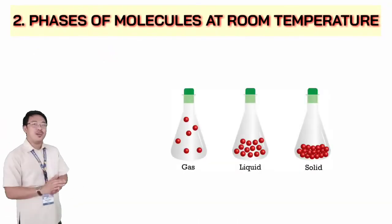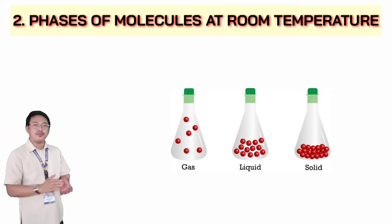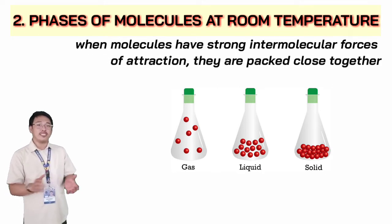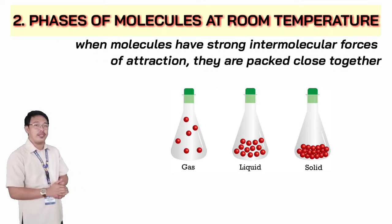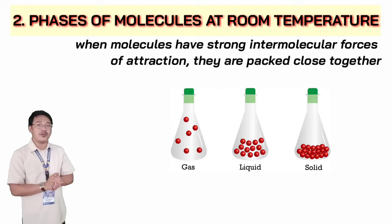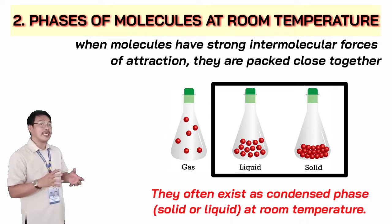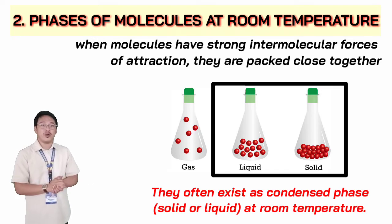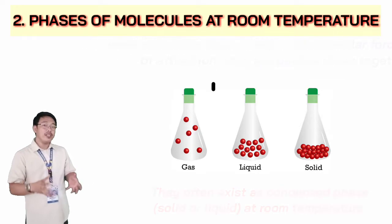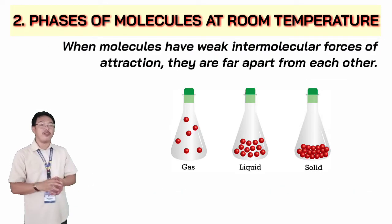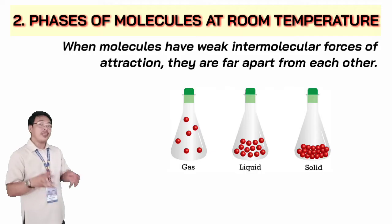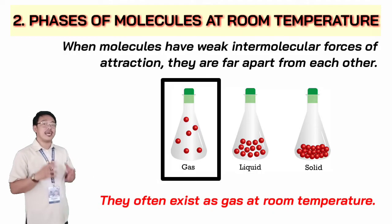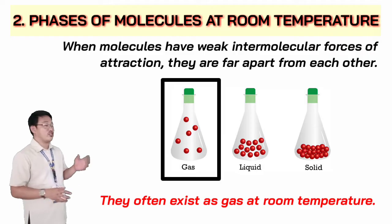Next, we have number two: phases of molecules at room temperature. When molecules have strong intermolecular forces of attraction, they are packed close together and often exist as a condensed phase — solid or liquid — at room temperature. When molecules have weak intermolecular forces of attraction, they are far apart from each other and often exist as gas at room temperature.